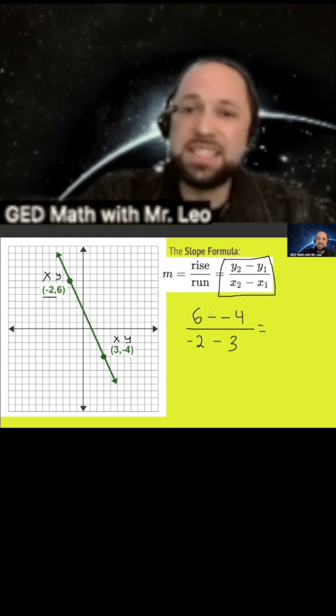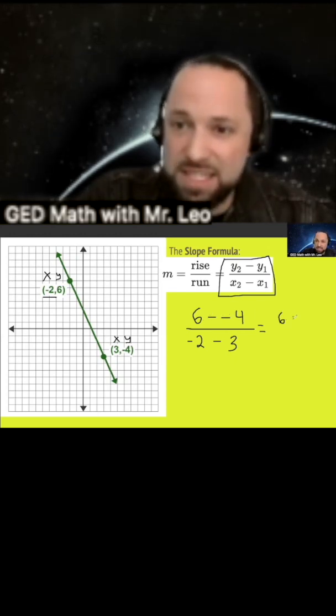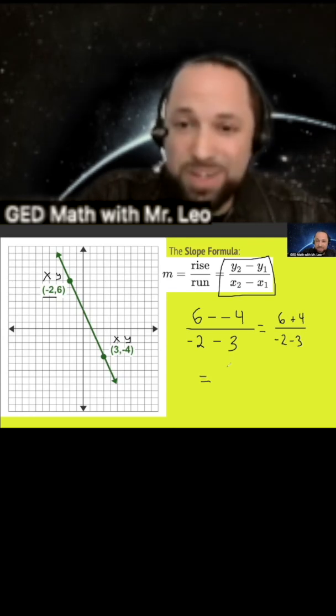All right, let's do a little math here. 6 take away negative 4. That's a double negative. We could rewrite this as 6 plus 4. 6 plus 4 is 10.